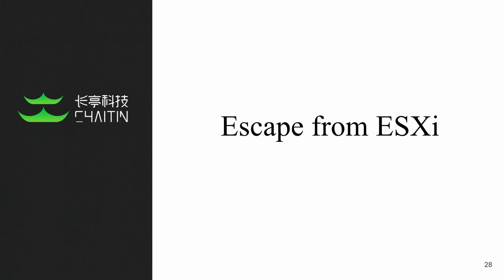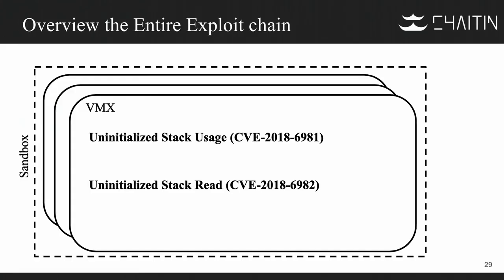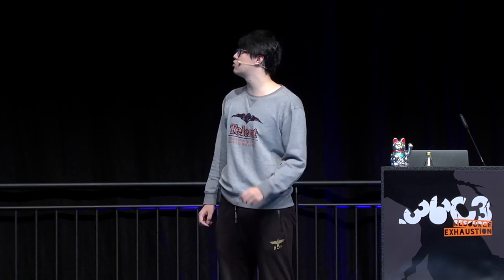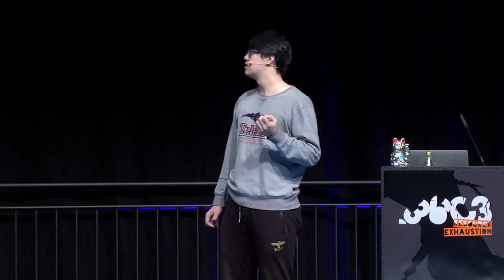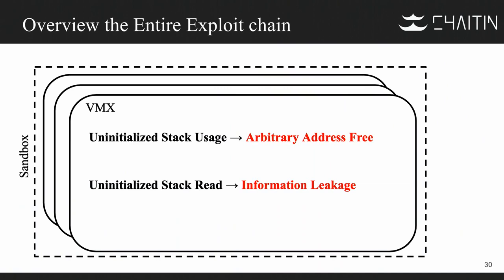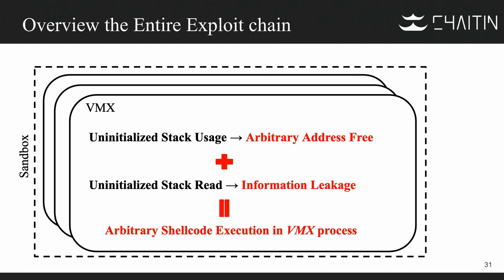Now let's start the journey of escaping from ESXi. Let's overview the entire exploit chain first. We use two memory corruption vulnerabilities. The first is an uninitialized stack usage vulnerability — CVE-2018-6981. The second is an uninitialized stack read vulnerability — CVE-2018-6982. Using the first we can do arbitrary address free, and the second gives us an information leak. Combining these two, we can achieve arbitrary shellcode execution in the VMX process. Finally, we use a logic vulnerability to escape the sandbox and receive a root shell from the ESXi.